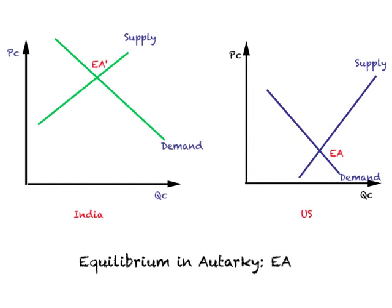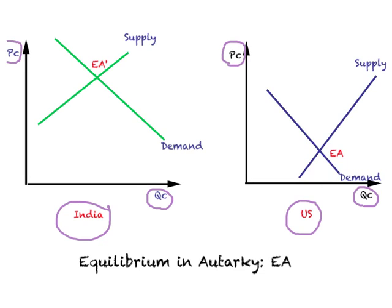We are looking at the market for clothing in two countries: the U.S. and India. On the axes, the horizontal axis is QC — quantity of clothing — and the vertical axis is PC — price of clothing — for each of the two countries. Initially, let us look at a situation of no foreign trade. Autarky means a situation of no foreign trade, so we are looking at each country separately with no trade between them.